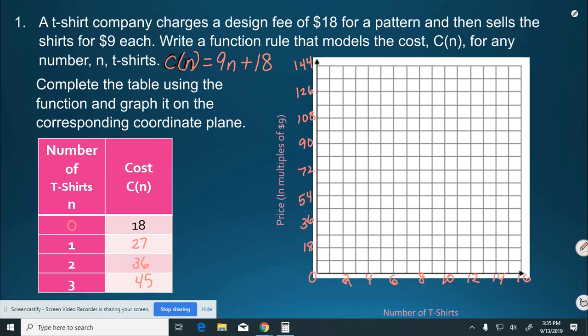Now we can start to graph our information. Zero t-shirts, as we explained before, is going to cost us $18, one t-shirt, 27, two t-shirts, 36, three t-shirts, 45, four t-shirts, 54, and it would keep on going up by 9 each time. So, we can see a pattern going on. And you can continue that pattern to make your linear function relationship.